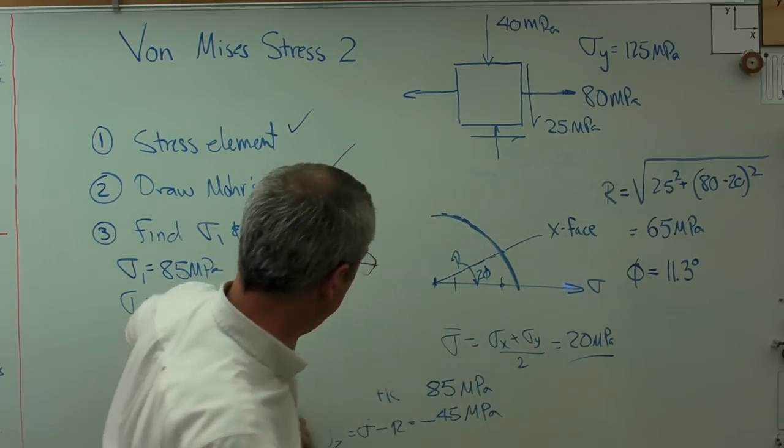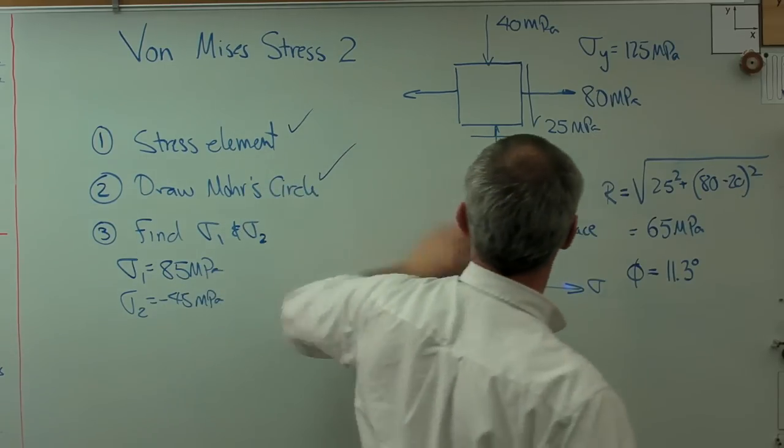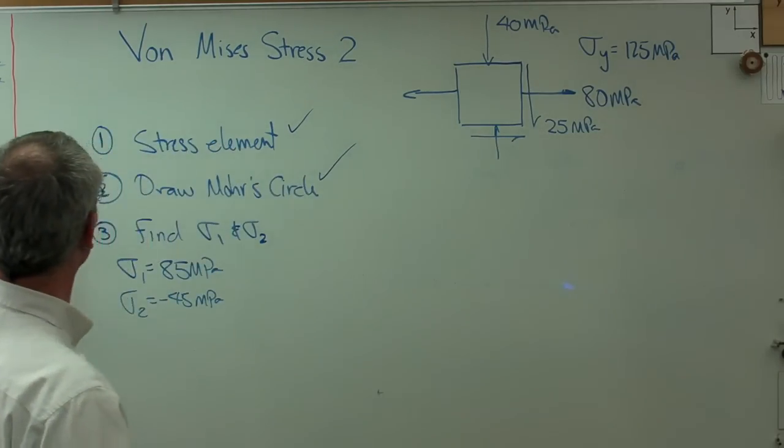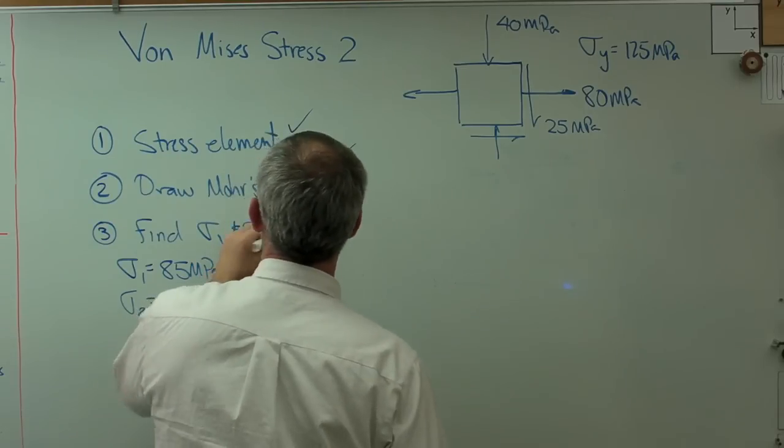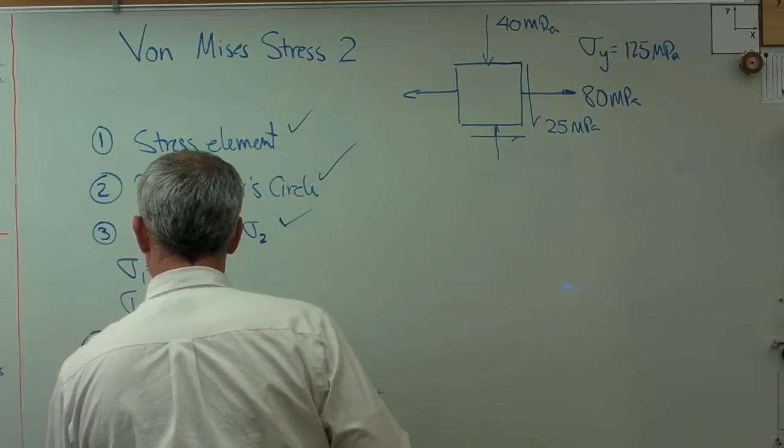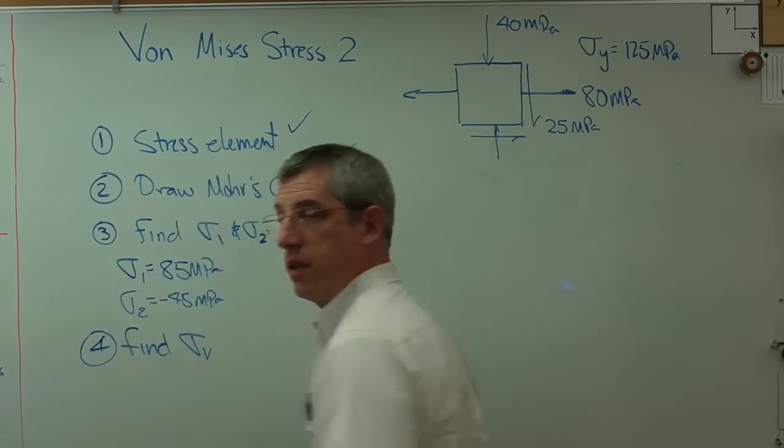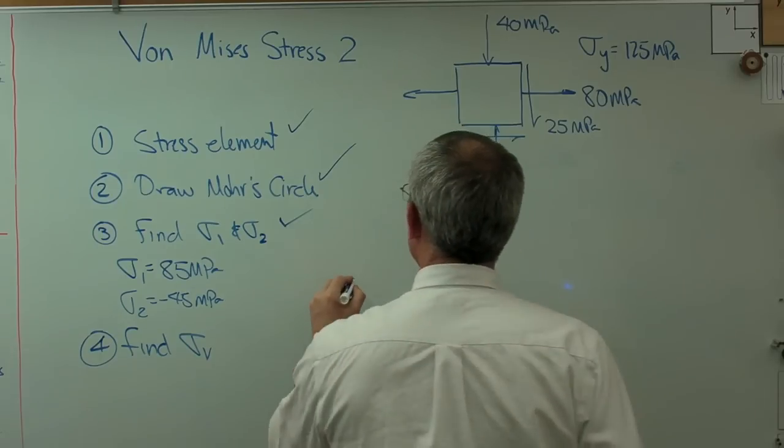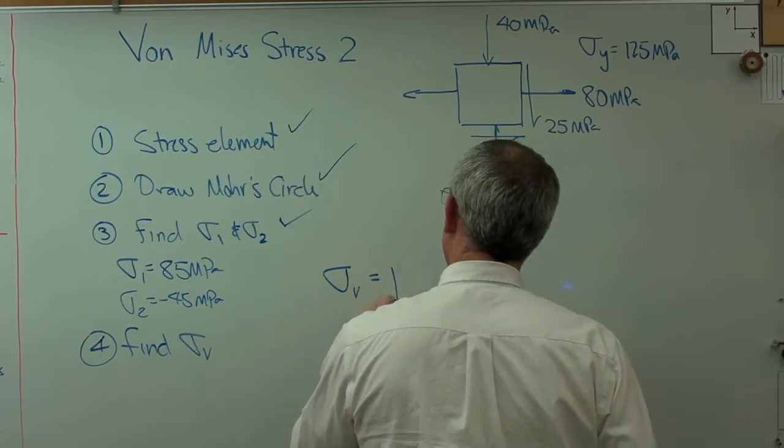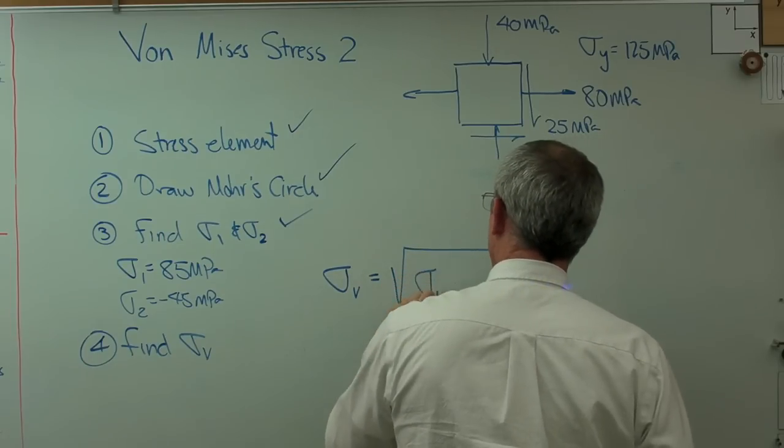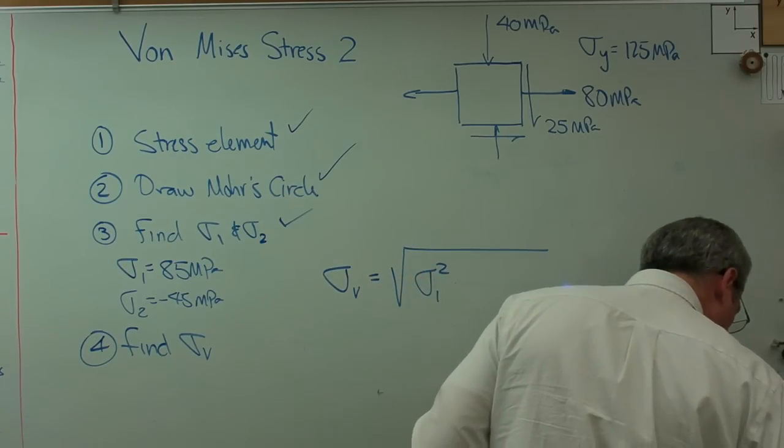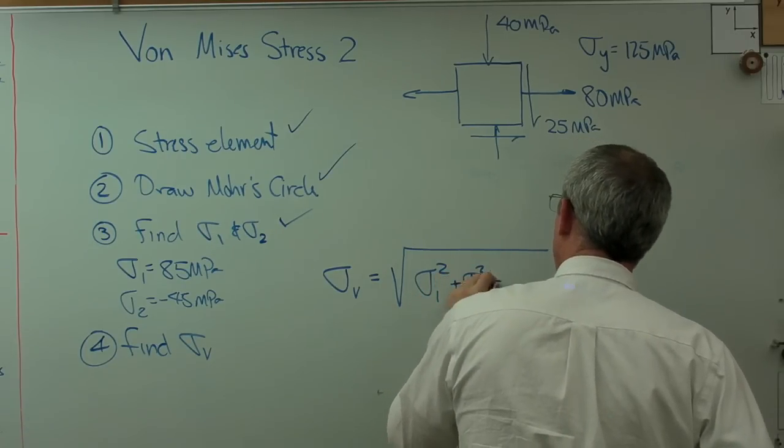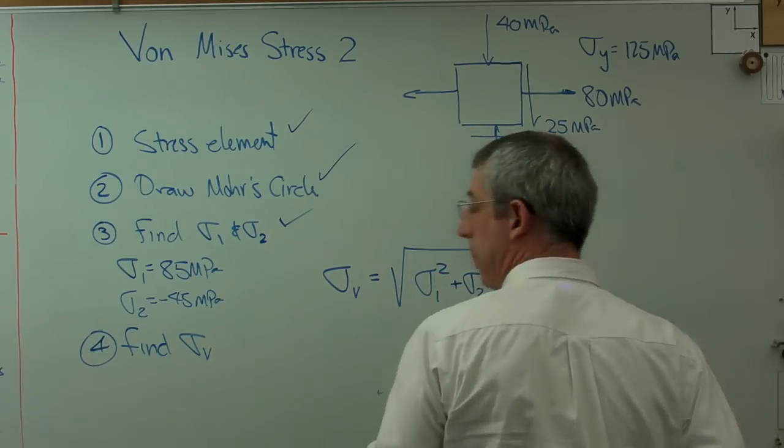So, let's erase all this stuff here. All I need to do now, I've done steps 1, 2, 3. And so, for find sigma v. Well, how do you figure out sigma v? For plain stress like we've got here, the expression for von Mises stress is sigma 1 squared. Let's see how I put it. Plus sigma 2 squared minus sigma 1 sigma 2. All right.